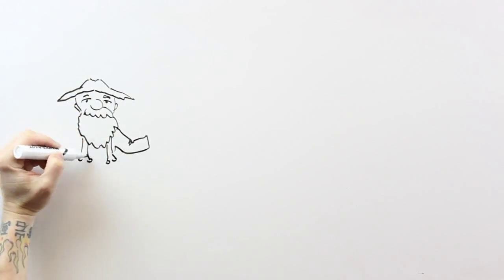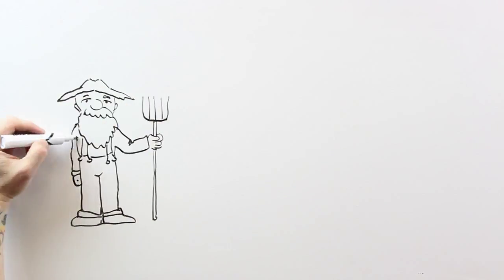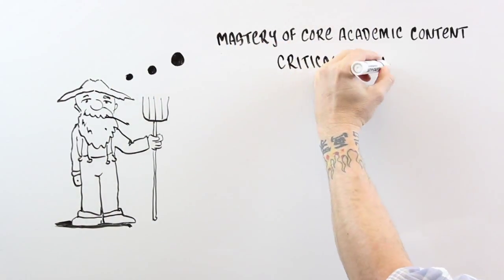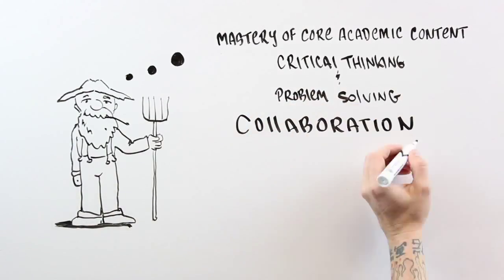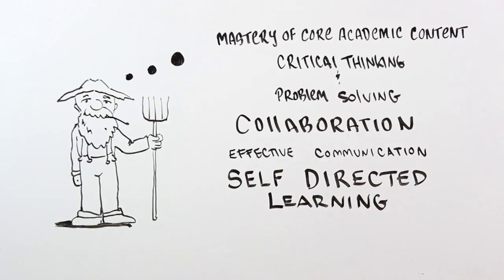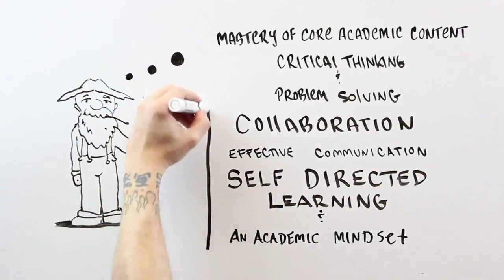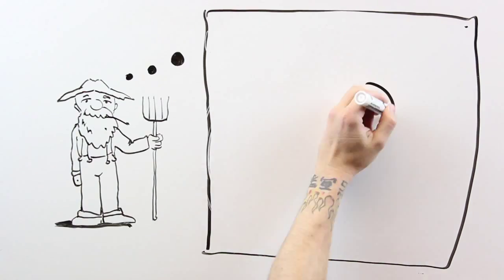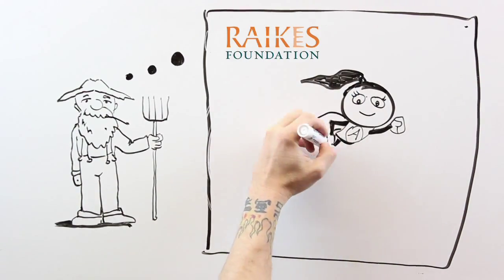The Hewlett Foundation has defined deeper learning as students mastering core content, thinking critically, collaborating well with others, being effective communicators, being self-directed learners, and possessing academic mindsets. And the last two, self-directed learning and academic mindsets, the Rakes Foundation has defined as students having agency.